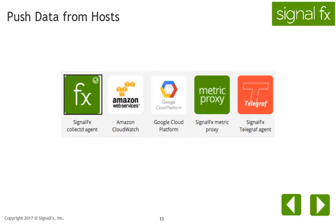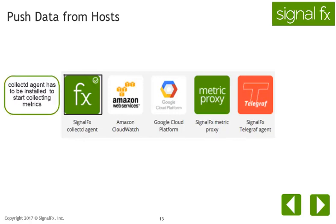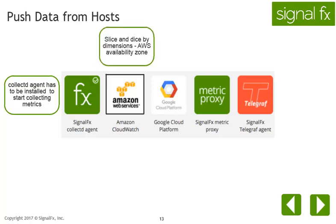Use collectd to monitor infrastructure metrics and collectd plugins to monitor a wide range of software. The collectd agent has to be installed in order to start collecting metrics. You can also send AWS CloudWatch metrics to SignalFX. Connecting to AWS CloudWatch also gives access to AWS metadata, which allows you to slice and dice by dimensions such as availability zone.